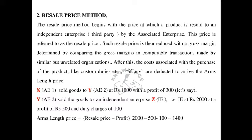Y sold goods to an independent enterprise at Rs. 2,000 with a profit of Rs. 500, and duty charges of Rs. 100. Therefore, arm length price equals resale price minus profit minus costs associated with the purchase. Here, resale price is Rs. 2,000 minus profit Rs. 500 minus duty charges Rs. 100. Therefore, the arm length price will be Rs. 1,400.